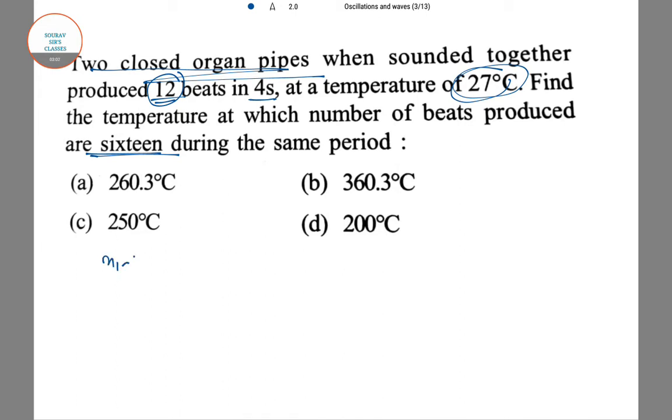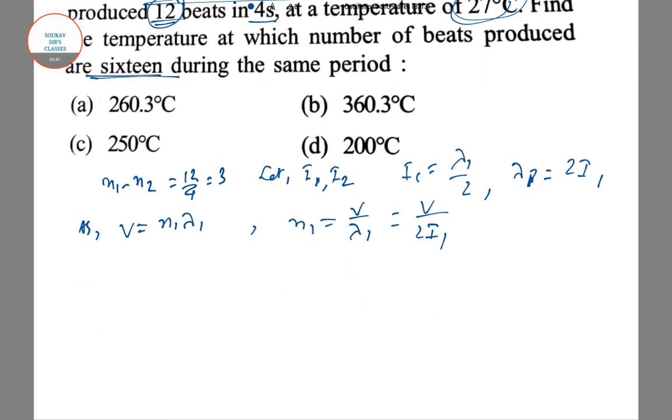We have N₁ - N₂ = 12/4 = 3. Let l₁ and l₂ be the lengths of the closed organ pipes. Then l₁ = λ₁/2 and λ₁ = 2l₁. As v = N₁λ₁, we get N₁ = v/(2l₁).